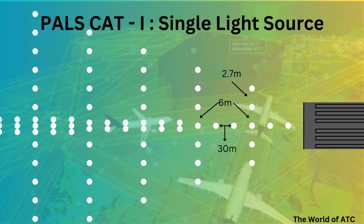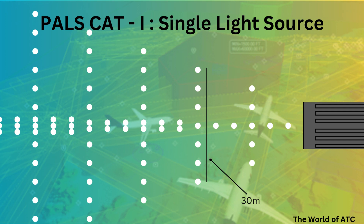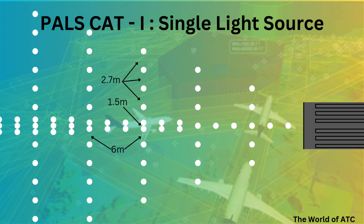Moving forward, the distance between the centerline lights remains 30 meters and the next crossbar will be at 300 meters, having a length of 30 meters. Similarly, after this, the double light source starts and the distance between these two lights on the centerline will be 1.5 meters.